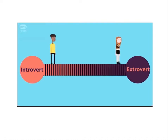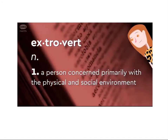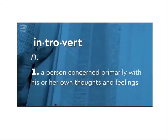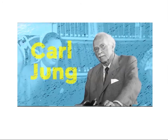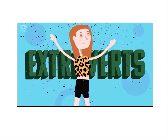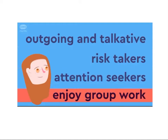An extrovert is a person concerned primarily with the physical and social environment, while an introvert is a person concerned primarily with his or her own thoughts and feelings. The terms were made popular by Carl Jung, a Swiss psychiatrist who invented analytical psychology. Extroverts — the life of the party — are outgoing and talkative, risk-takers, attention-seekers, and enjoy group work.